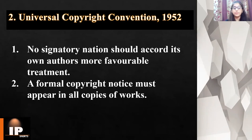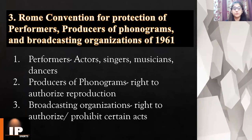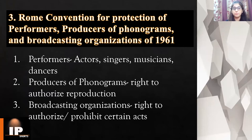The third convention is the Rome Convention for the Protection of Performers, Producers of Phonograms and Broadcasting Organizations of 1961. As the name suggests, it protects three main categories: first, performers — which includes actors, singers, musicians, dancers, and any person who performs any literary or artistic work; second, producers of phonograms; and third, broadcasting organizations.